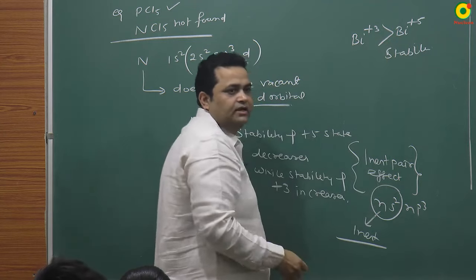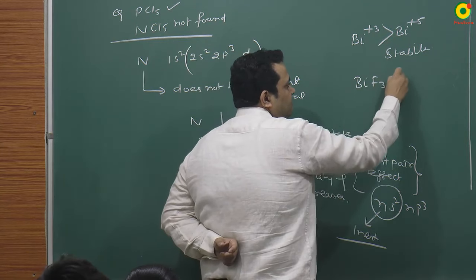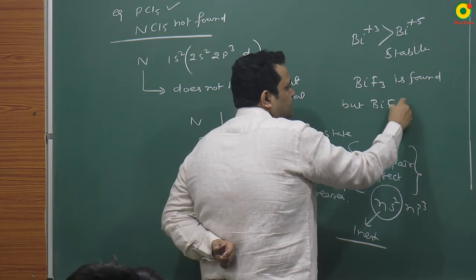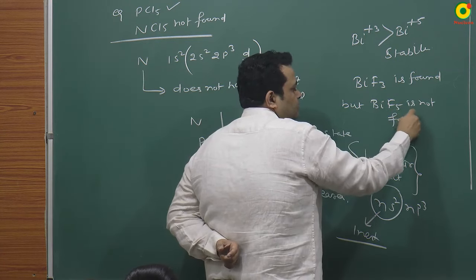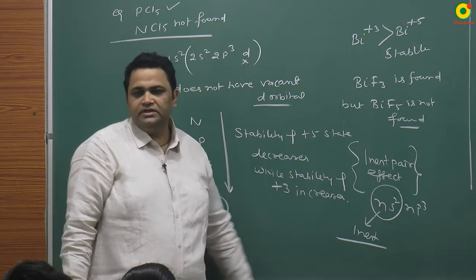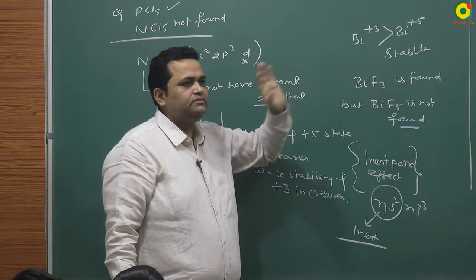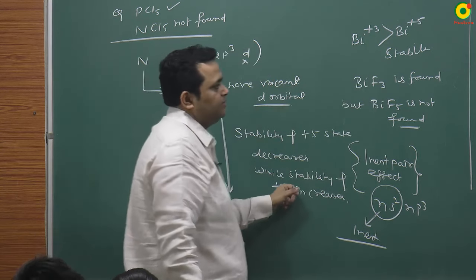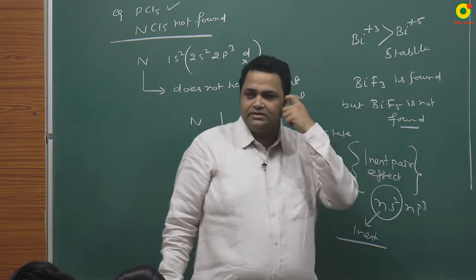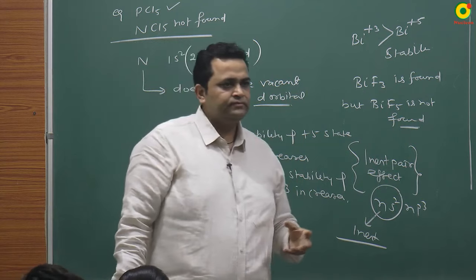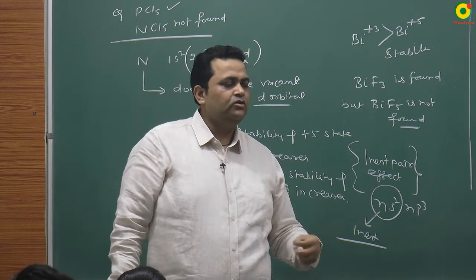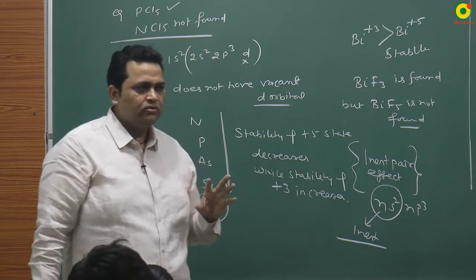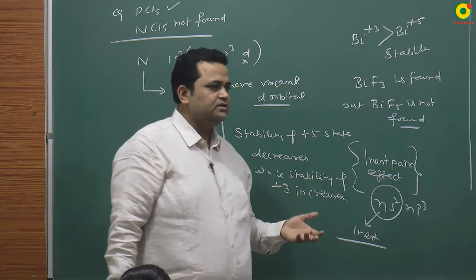The inert pair effect is most dominant for the last element. For bismuth, the +3 state is more stable than +5. In nature, BiF3 is found but BiF5 is not found. If BiF5 were to form, it would immediately convert back to the +3 state. So the oxidation state varies from -3 (gaining 3 electrons to become like an inert gas) to +5 (donating all 5 valence electrons).